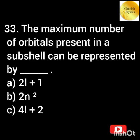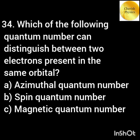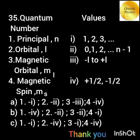The maximum number of orbitals present in a subshell can be represented by (2l+1). Which of the following quantum numbers can distinguish between two electrons present in the same orbital? The spin quantum number.